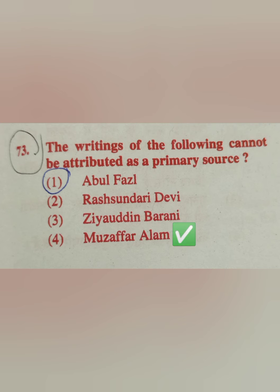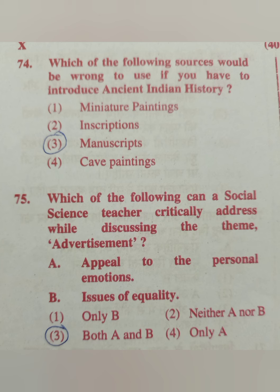Question 74: Which of the following sources would be wrong to use if you want to introduce ancient Indian history? Options: miniature paintings, inscriptions, manuscripts, cave paintings. The correct answer is miniature paintings — we cannot explain ancient India's history through miniature paintings. We can use inscriptions, manuscripts, and cave paintings since our ancestors created those.